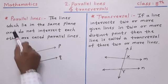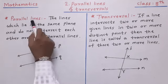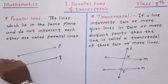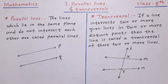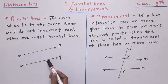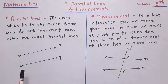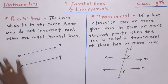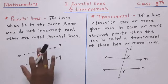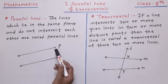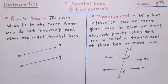First of all we are going to understand what is meant by parallel lines. The lines which lie in the same plane and do not intersect each other are called parallel lines. Here in the figure you can see that line P and line Q are in the same plane. This board is just like a plane and both the lines are in the same plane and they are not intersecting each other. So they are parallel lines.